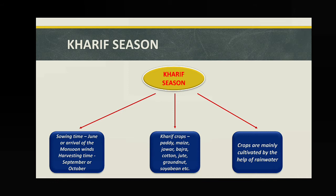In Kharif season, crops that require a huge amount of water, can tolerate water-logging conditions, and can tolerate high temperatures are cultivated — these are called Kharif crops. Examples include paddy, jowar, bajra (millets), cotton, jute, groundnuts, soybean, etc. These crops are mainly cultivated using rainwater, since it is the rainy season; irrigation is not typically used here.